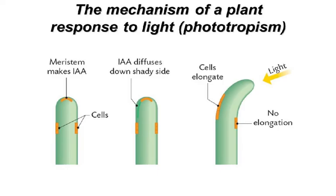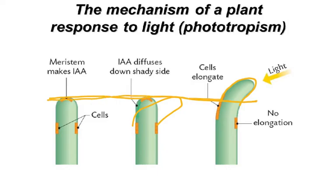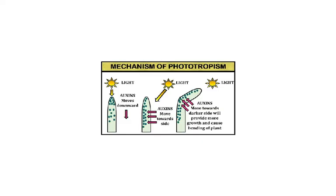Another diagram explaining this: the meristem makes IAA; IAA diffuses down the shady side; cells elongate. The further growth is towards light — it is not that the existing stem bends, but rather the new growth goes towards light. Auxin moves downwards and towards the darker side, providing more growth and causing bending of the plant.